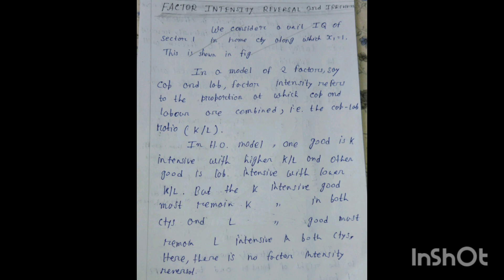In a model of two factors — capital and labor — factor intensity refers to the proportion at which capital and labor are combined, represented as the capital-labor ratio K/L. In the Heckscher-Ohlin model, one good is capital intensive with a higher K/L ratio and the other good is labor intensive with a lower K/L ratio. The capital intensive good must remain capital intensive in both countries and the labor intensive good must remain labor intensive in both countries — hence there is no factor intensity reversal.